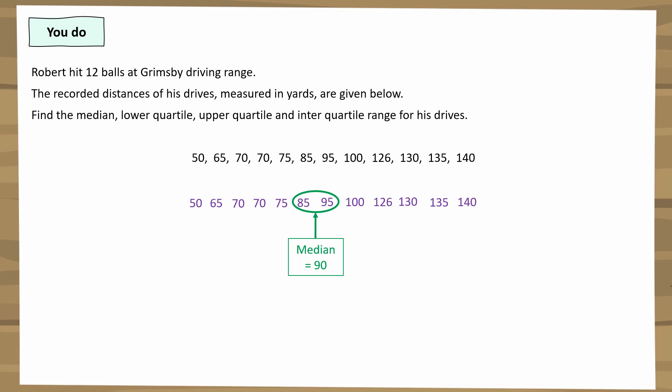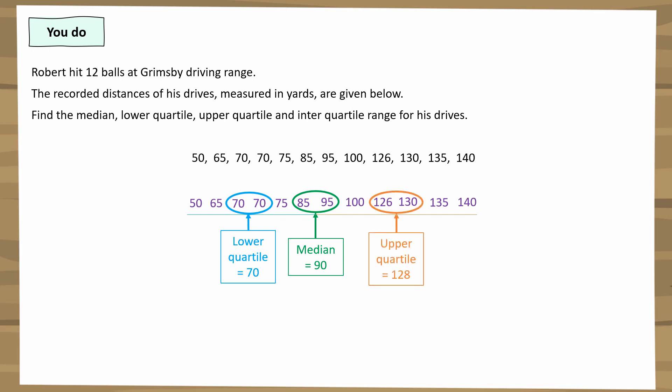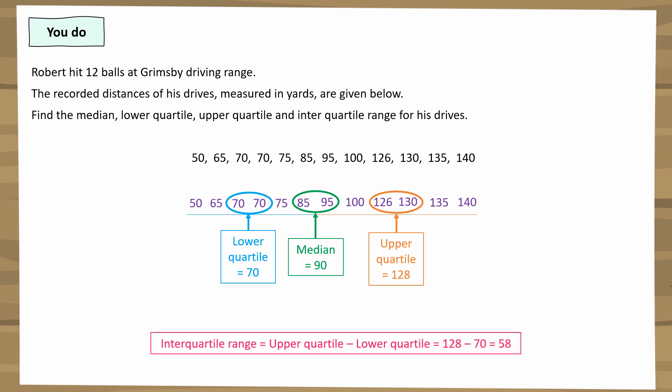For the lower quartile, find the median of the left-hand data set including the 85. The two middle values are both 70, so the lower quartile is 70. For the upper quartile, find the median of the right-hand data set including the 95 — it falls between 126 and 130, giving an upper quartile of 128. The interquartile range is 128 subtract 70, which is 58.